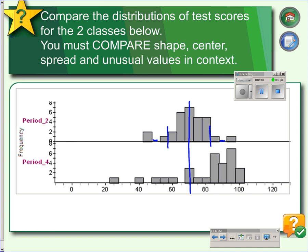And our second distribution, we would say, is skewed to the left, with an outlier down here. And the median value is going to be somewhere around 90, with an IQR of approximately 20. So shape, center, spread, and unusual values.